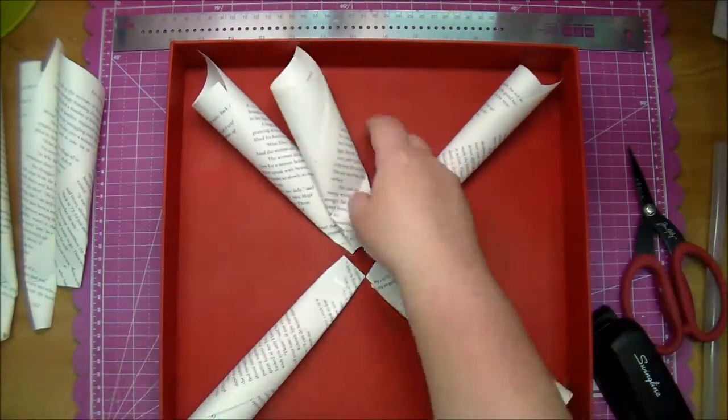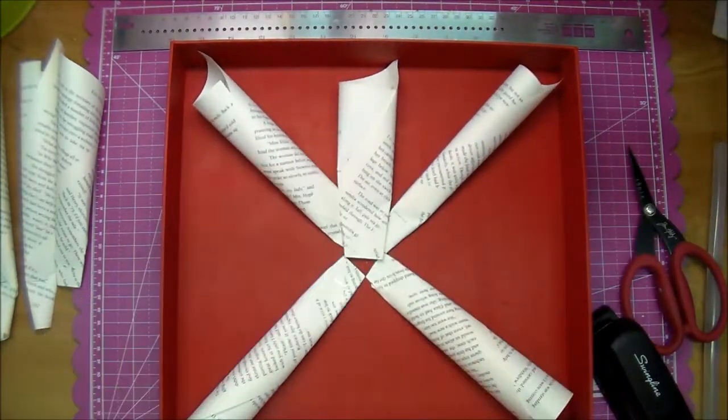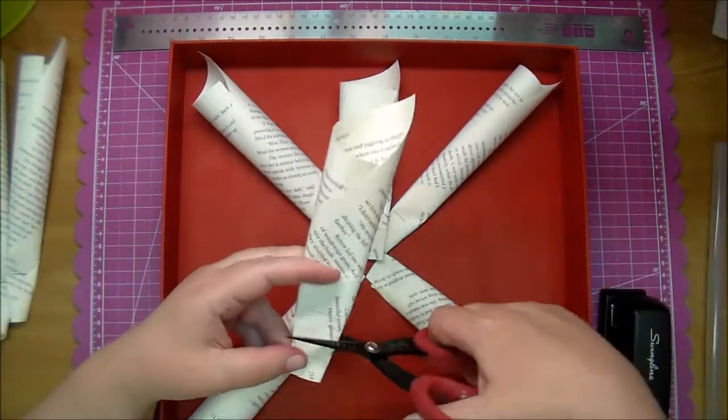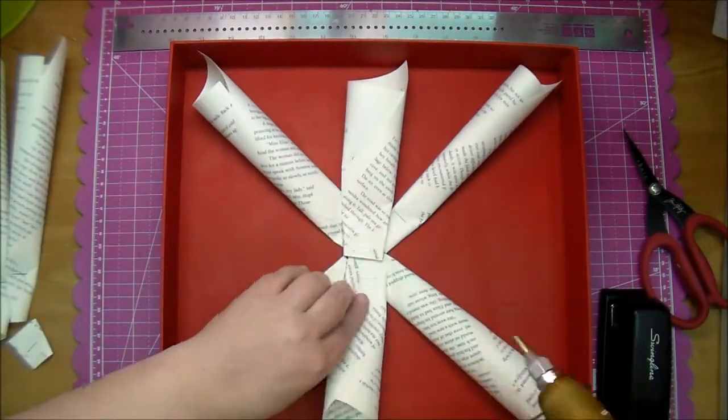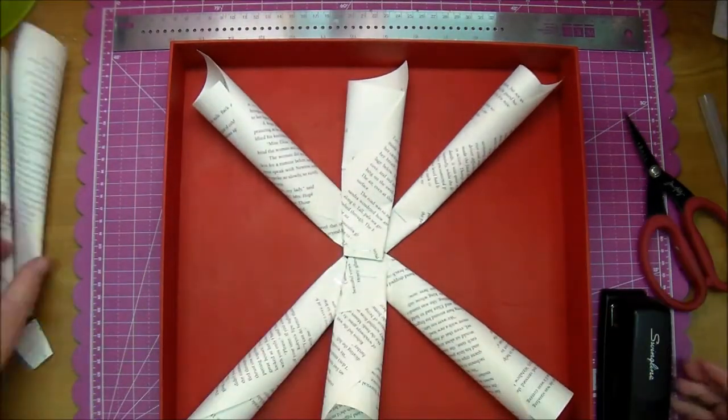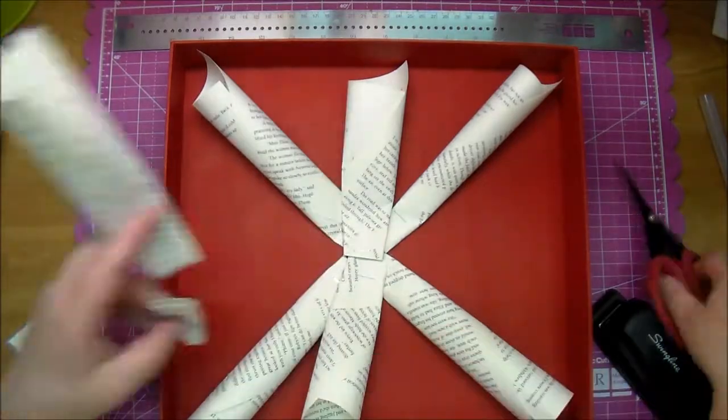So again I'm just kind of setting them where I need them, where I want them to go, and then once I see the size I'm going to staple them and cut them down. Then using hot glue I'll just go around and fill them all in.